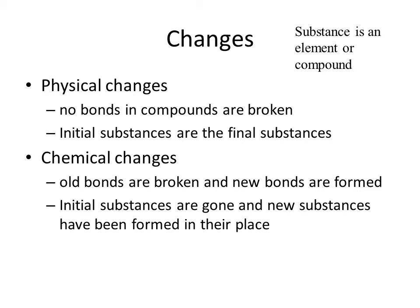In a chemical change, the old bonds are broken and new bonds are formed. The initial substances, like water, are gone, and new substances — hydrogen gas and oxygen gas — have been formed in their place. When we say a substance, what we mean is that it's something that is a pure element or a pure compound, not a mixture of things. A substance can be anything that is pure.